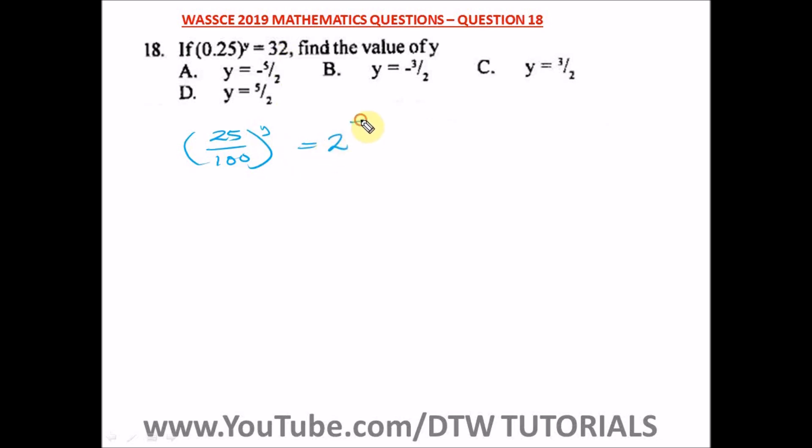25 divided by 100—how many times 25 going 100? It will go 4 times. So we have 1 over 4, all into bracket of the power of y, and we have 2 raised to power 5.